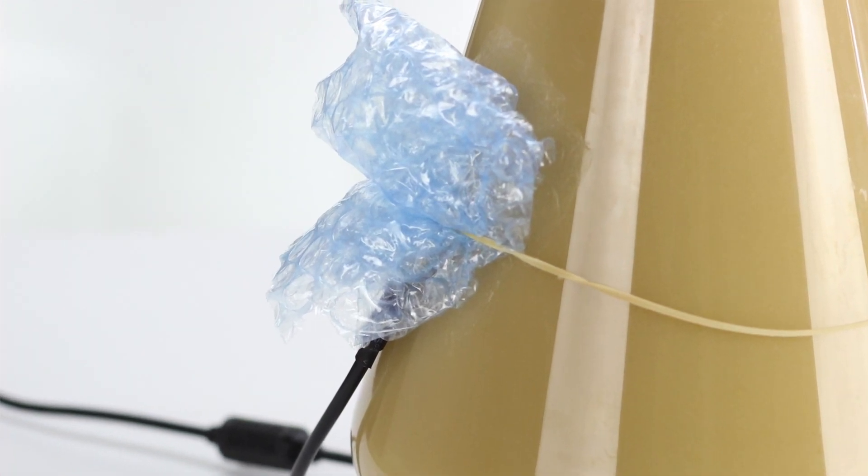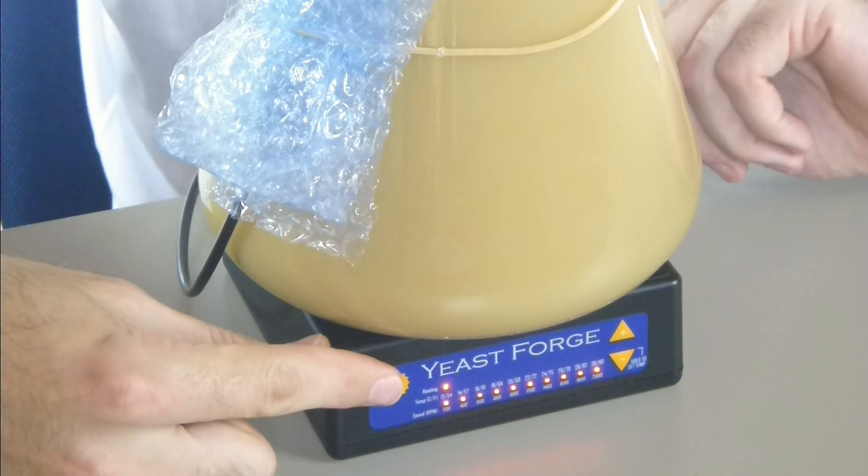Okay, with that in place and with it set to 30, I can turn this on now. And that's stirring away and you can also see that the heater is now on. The little heater LED indicates that it's heating and it's trying to bring this starter up to 30 degrees Celsius at the moment.